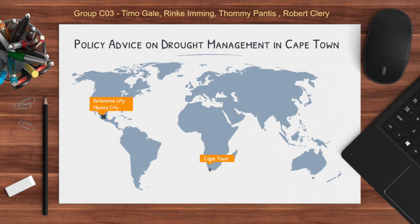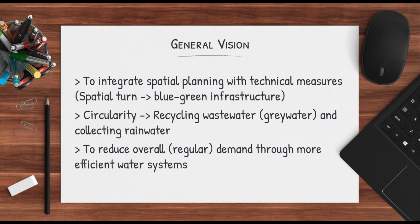Hello and welcome to our policy advice on drought management in Cape Town. We are group C3 and we will be using Mexico City as our reference city. The general vision for our plan is to integrate spatial planning with infrastructure, improve circularity by recycling water in multiple ways, and reduce the overall demand of water through more efficient and upgraded water systems.